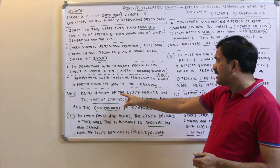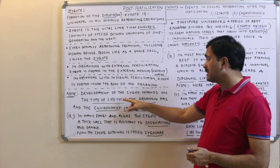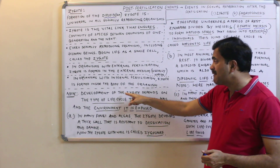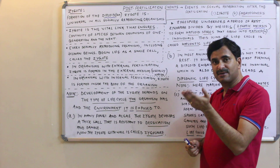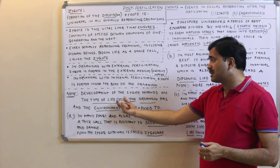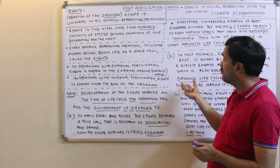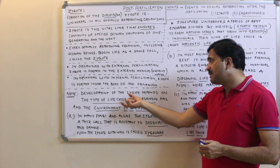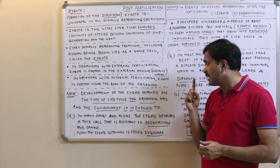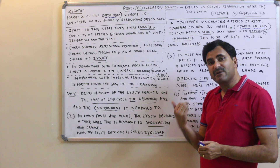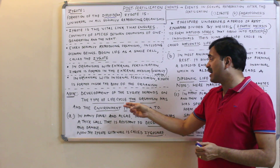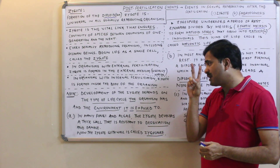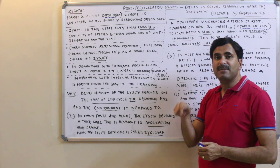An important note: the development of the zygote depends on two things — the type of life cycle the organism has, and the environment to which it is exposed. Different organisms have different life cycles, and we will now study three types of life cycles that determine the future development of the zygote.